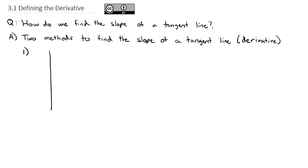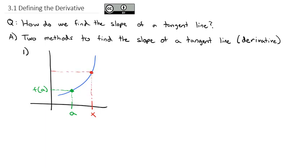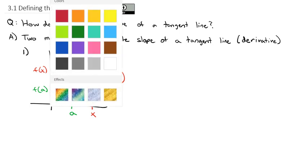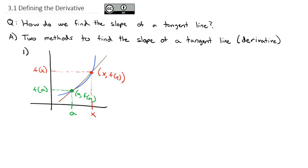The first method: graphically, say we've got some curve and a point where we want to know the slope — the rate of change of the tangent line at that point. If we go up from a, we get a point on the curve at f(a). To get a slope, we need a second point, so we go off to the right and pick some other x, which gives us f(x). The coordinates of the red point are (x, f(x)) and the green point are (a, f(a)). The line connecting those two dots is actually a secant line.